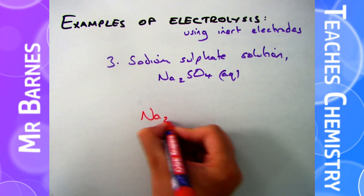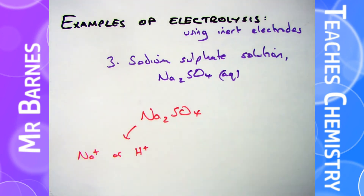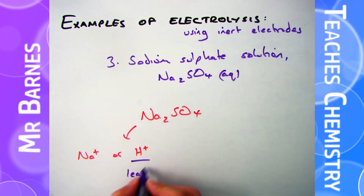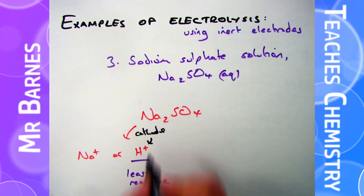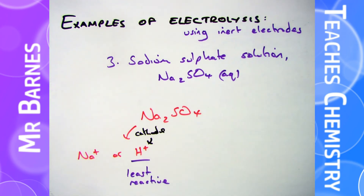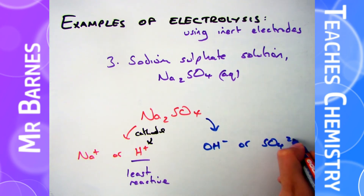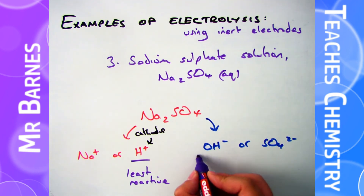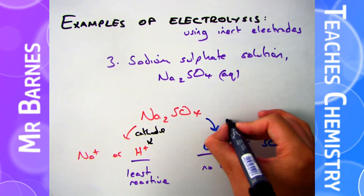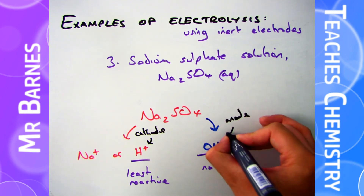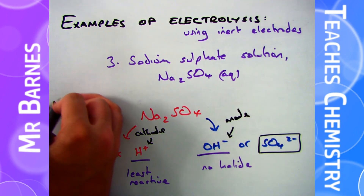If we look at sodium sulfate solution Na2SO4, again you've either got Na+ or H+. Sodium is in group one therefore it's reactive, so hydrogen will be produced at the cathode. The sulfate is not a halide, therefore I will get the hydroxide ion going to the anode which will produce oxygen and water, so I will see oxygen bubbles being produced.